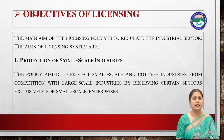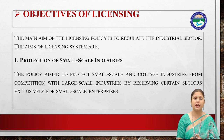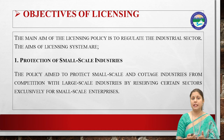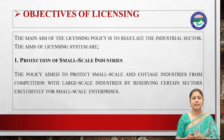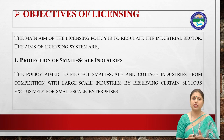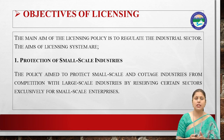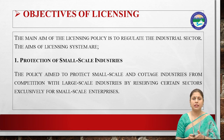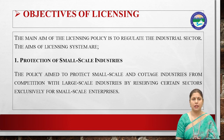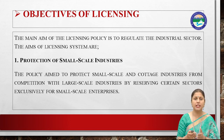Besides regulating the sector, another objective was the protection of small-scale industries — the cottage industries in India — from large industries. The government said that there were many products that could only be manufactured by small-scale industries. If large-scale industries wanted to manufacture those products, they needed to obtain a government license. So the first objective was to protect the small-scale industries.